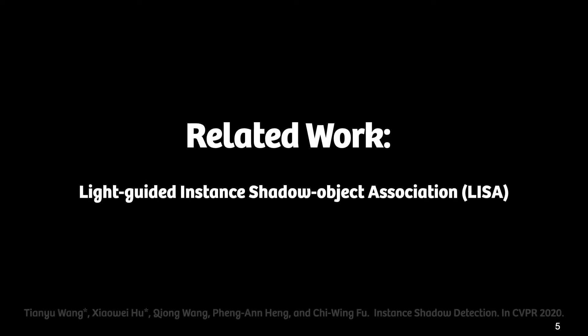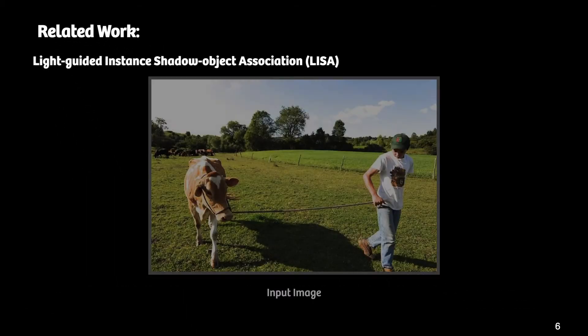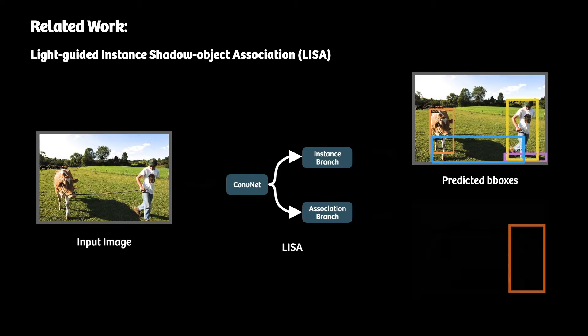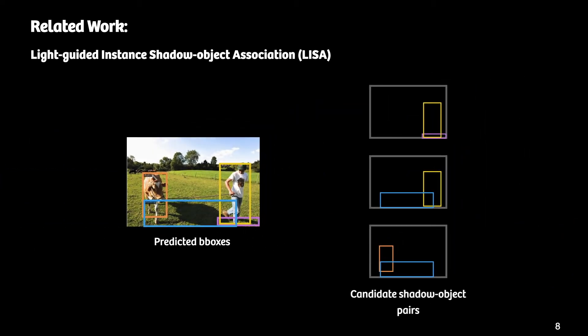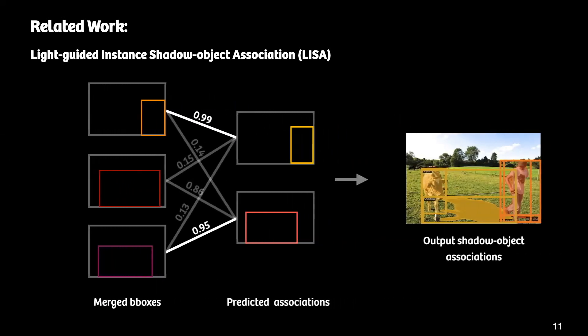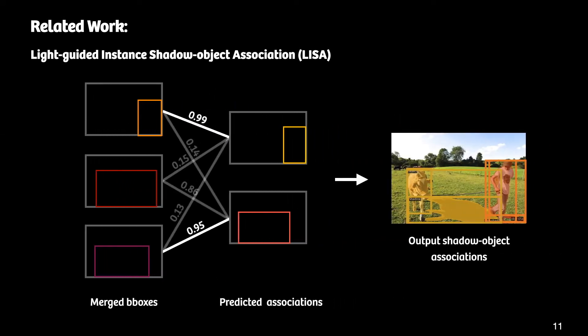The previous work introduced the light-guided instance shadow-object association framework for instance shadow detection, called LISA for short. It employs a two-branch architecture to predict the bounding box and mask of shadow and object instances, the bounding box of shadow-object associations, and the light directions. It then formulates a strategy to pair up shadow and object instances with the shadow-object associations predicted by the previous architecture.